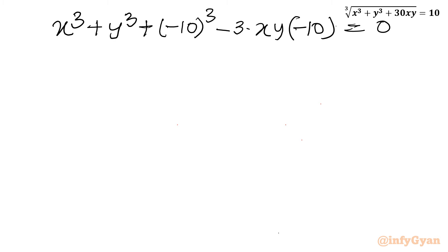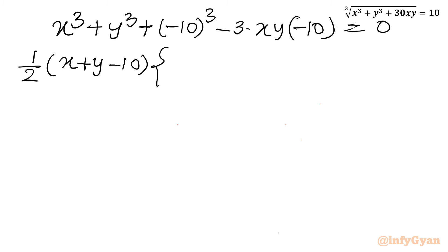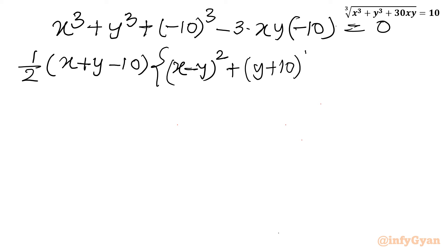Using ½ · (a + b + c), where a is x, b is y, c is -10, in the other brackets I write: (x - y)² + (y + 10)² + (-10 - x)², and the right hand side is 0.